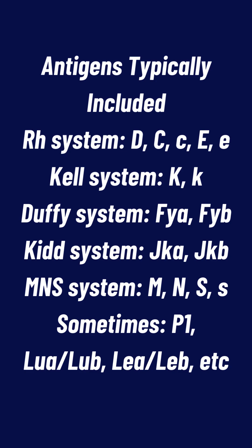Antigens typically included: RH system — D, C, c, E, e; KEL system — K, k; DUFFY system — FYa, FYb; KIDD system — JKa, JKb; MNS system — M, N, S, s. Sometimes also P1, Lua, Lub, Lea, Leb, etc.